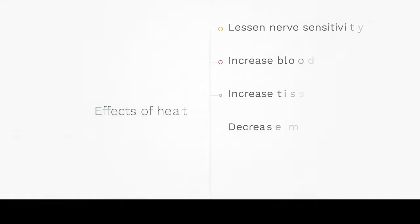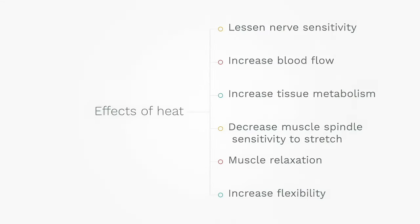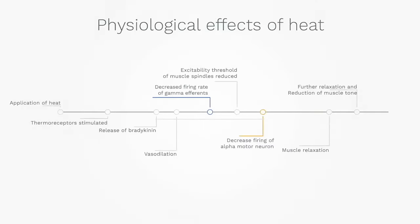Exercise is the best means to increase blood flow to a skeletal muscle. What the application of heat does achieve is lessened nerve sensitivity, increased blood flow, increased tissue metabolism, decreased muscle spindle sensitivity to stretch, muscle relaxation, and increased flexibility. Heat stimulates thermoreceptors connected to cutaneous blood vessels, causing the release of bradykinin which relaxes smooth muscle walls, resulting in vasodilation. Muscle relaxation occurs as a result of a decreased firing rate of the gamma efferents, lowering the excitability threshold of muscle spindles and increasing afferent activity. There is also a decrease in firing of the alpha motor neuron to the extrafusal muscle fibre, resulting in muscle relaxation and decreased muscle tone, and it may also induce a state of mental relaxation.